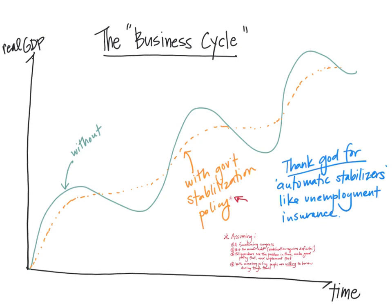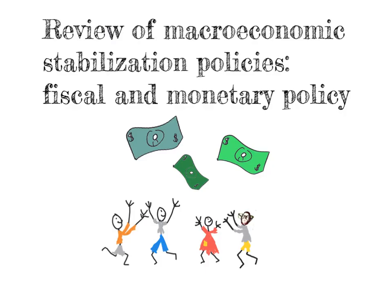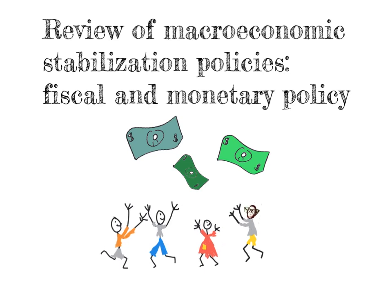We do have automatic stabilizers — things like unemployment insurance and other programs set up whereby Congress does not have to take any specific action, but when we hit a recession, more people qualify for unemployment compensation and the system automatically stabilizes. Although, in 2020, we already see there are some problems with automatic unemployment insurance — it's not getting to people very quickly at all. And that's your review of macroeconomic stabilization policies: fiscal and monetary policies.